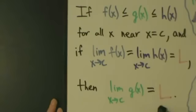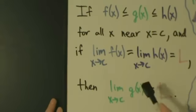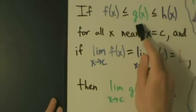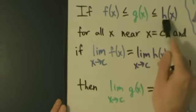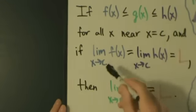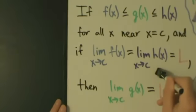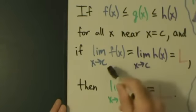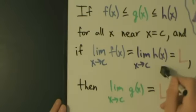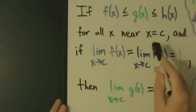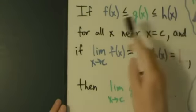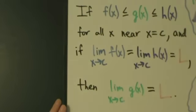The reason is because g is squeezed between f and h, and if f and h have the same limit as x goes to c, then g must also have that same limit, because around x = c, g is squeezed between f and h.